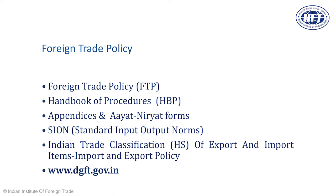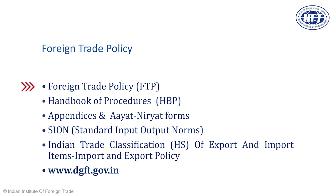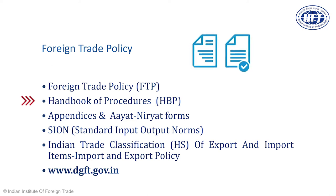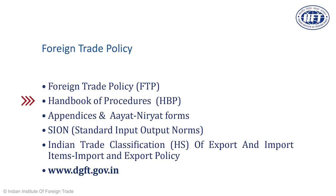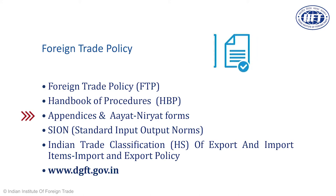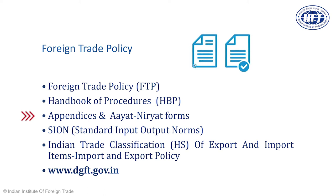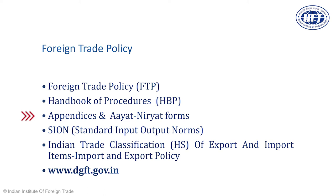Let us go through the documents containing the provisions of the FTP one by one. We have the foreign trade policy which is the core document. Then there is the handbook of procedures, which provides for the various procedures the exporter needs to follow before applying for certain schemes under the FTP. Then there are the appendices and the Ayat Neryat forms. The mechanism by which an exporter applies is through the submission of documents — before giving any grant or scheme benefit, the government wants certain details from exporters, which are required to be filled in the Ayat Neryat forms.